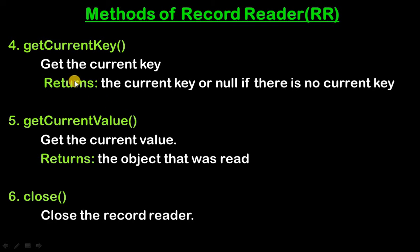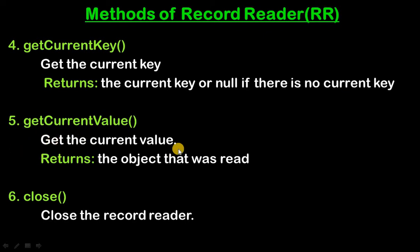The fourth method is getCurrentKey, which gets the current key and returns the current key or null if there is no current key. The fifth method is getCurrentValue, which gets the current value and returns the object that was read. The sixth method is close, which closes the Record Reader. All these methods are abstract and we need to override them.